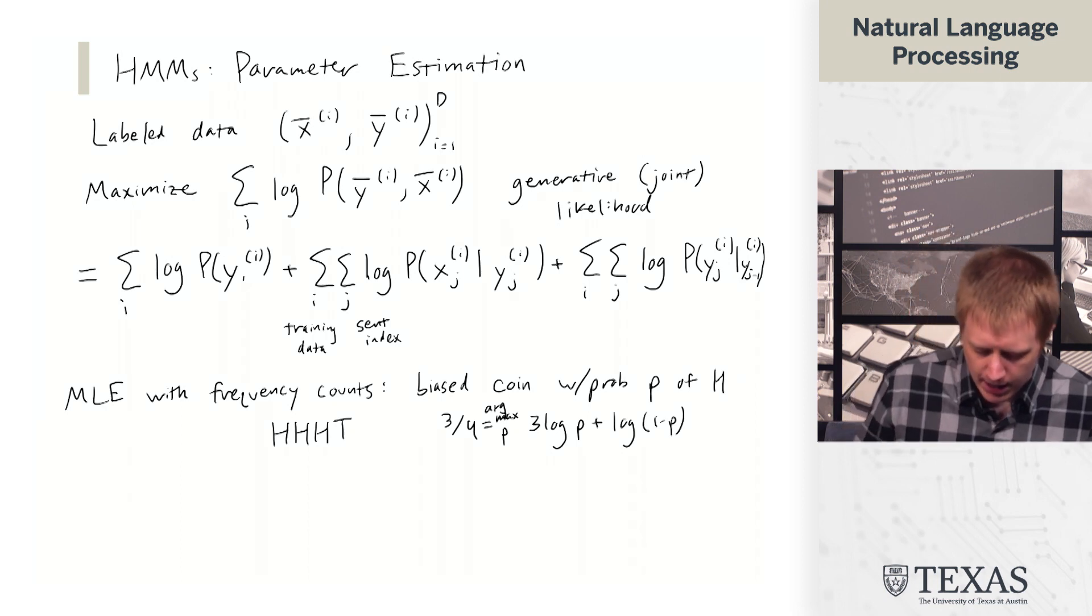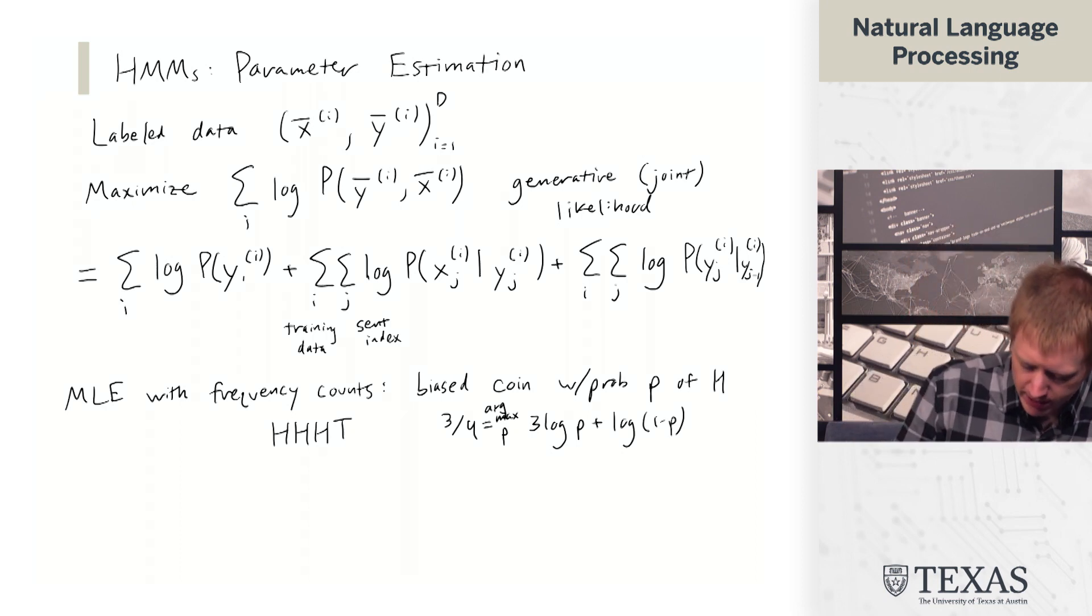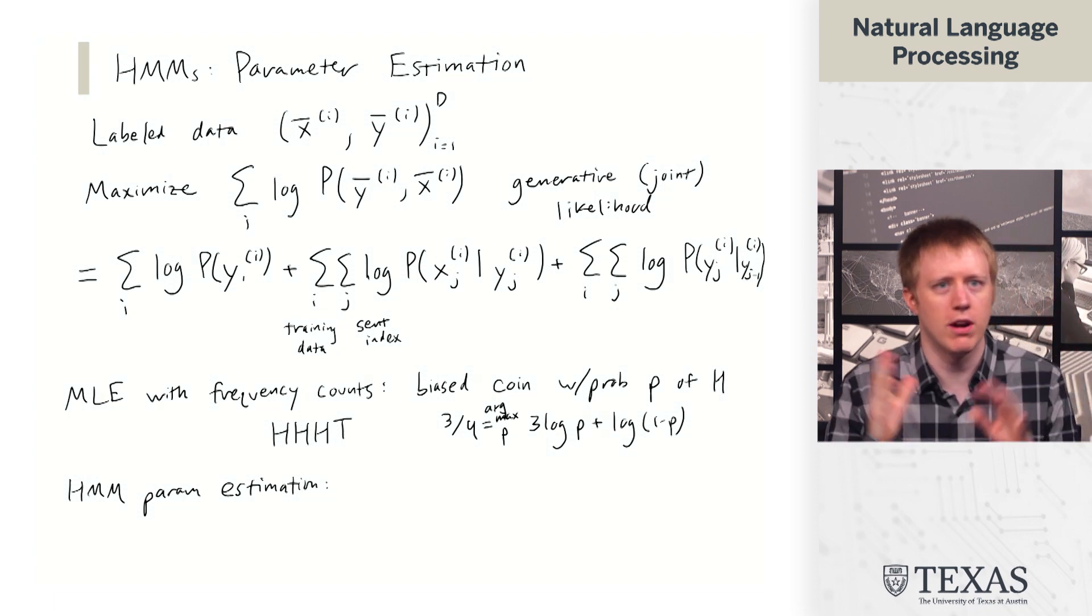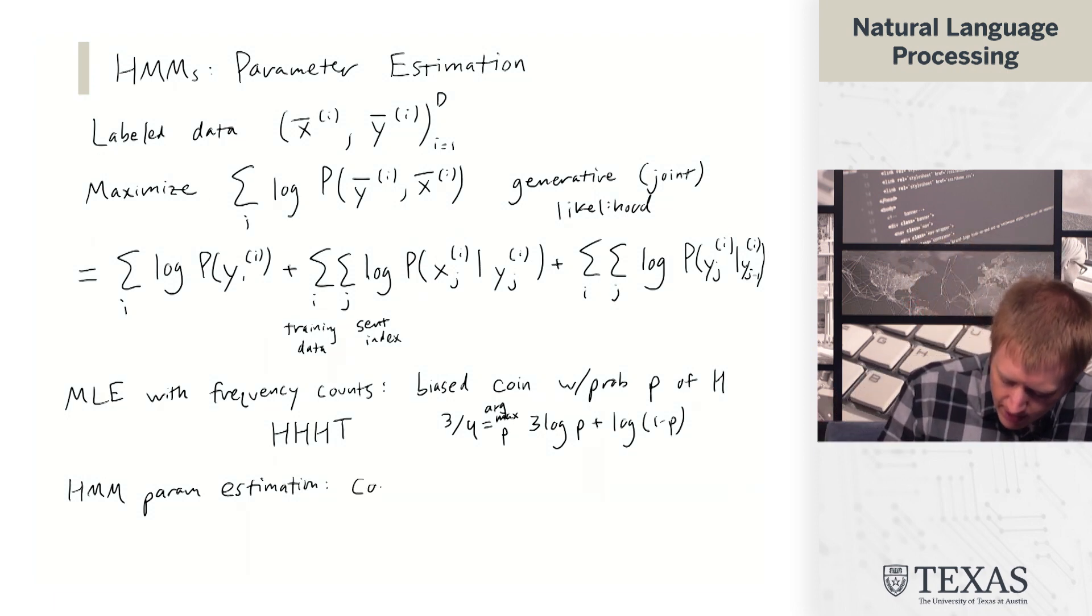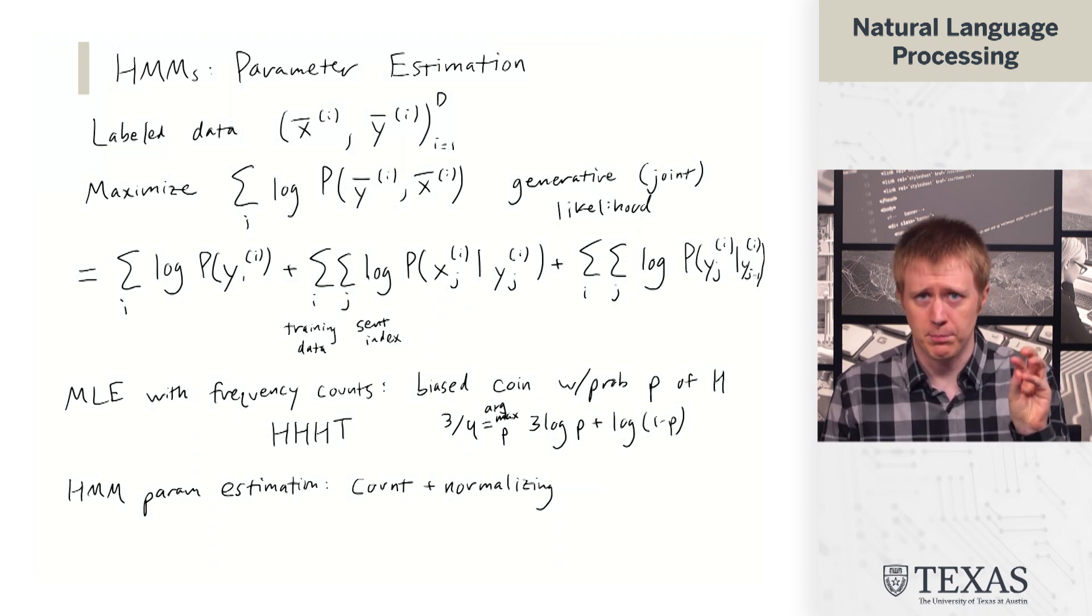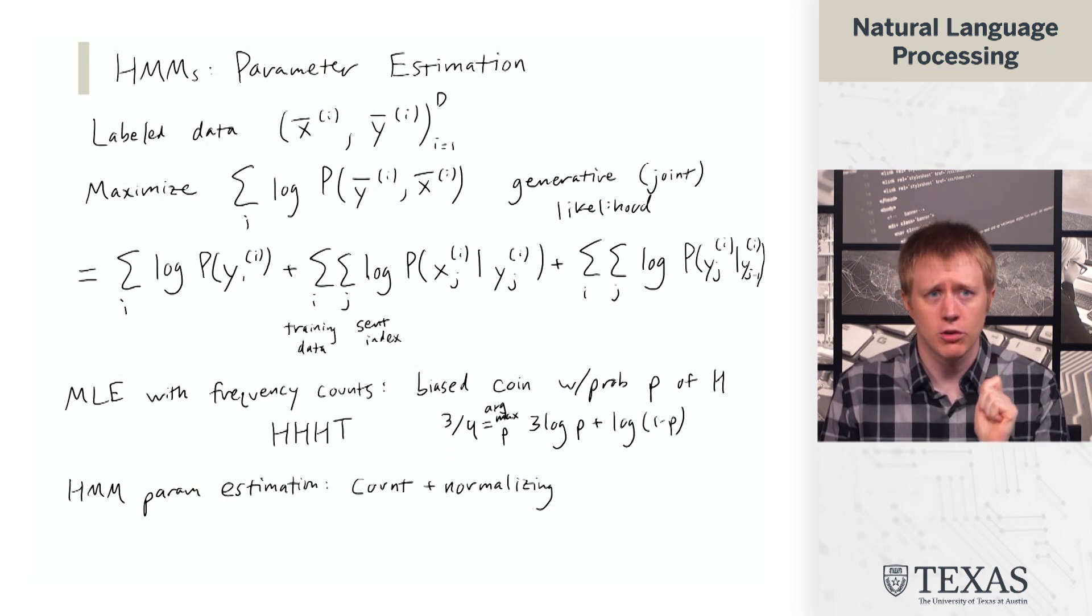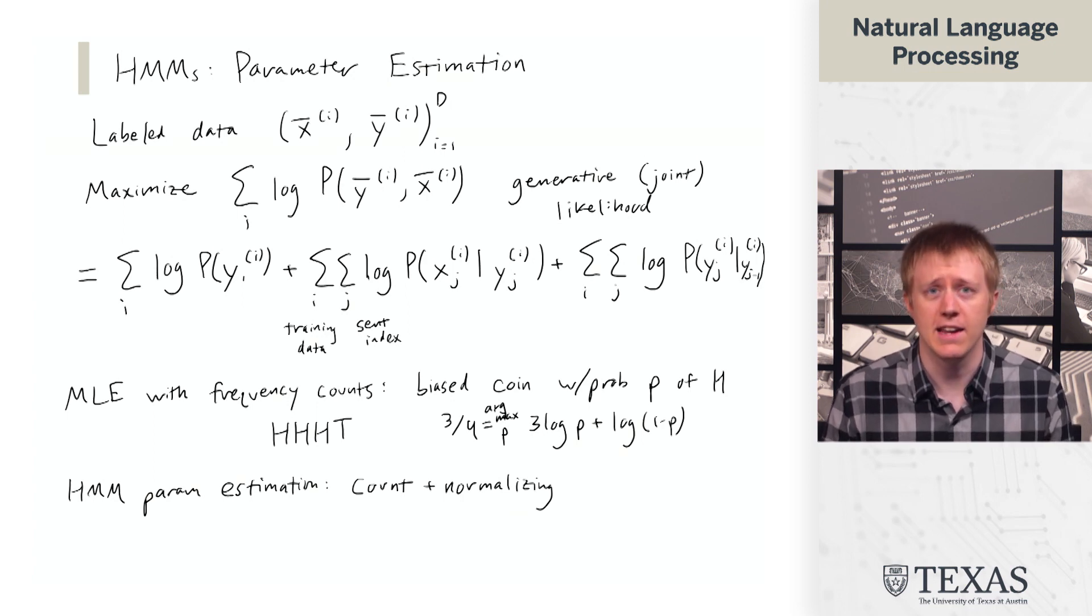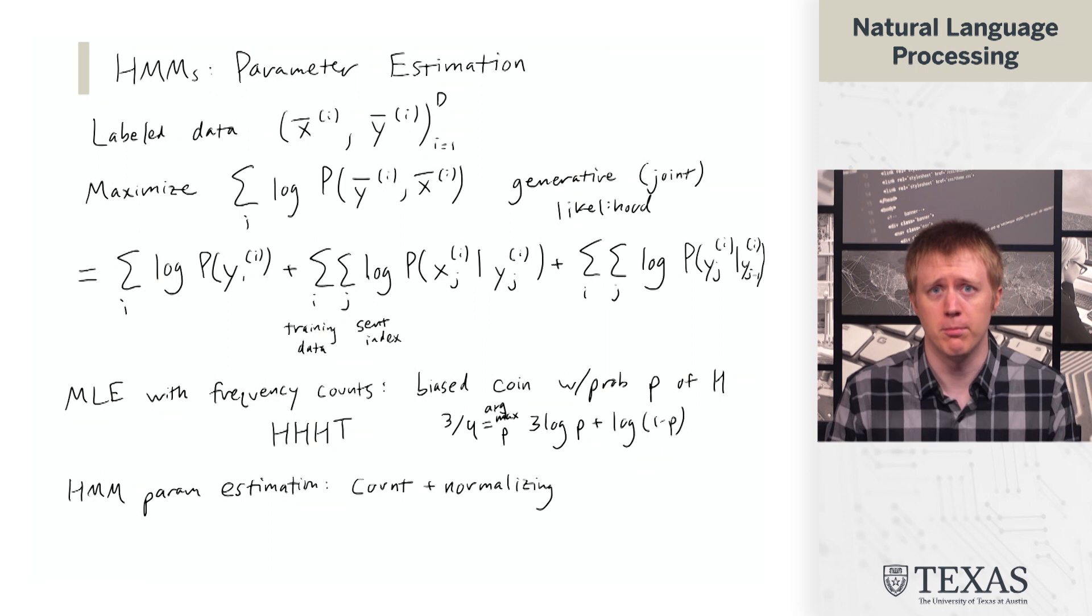So the basic moral of the story is HMM parameter estimation doesn't involve gradient descent or anything like that. You could do it by counting and normalizing. And what I mean by that is that we are going to look at our data, we're going to look at instances of each of these events of initial samples, emissions, and transitions. We're going to count up occurrences of those, and then we're just going to normalize them to make them probability distributions. And it turns out that this is the correct procedure for maximizing this likelihood.